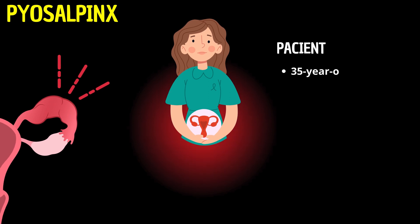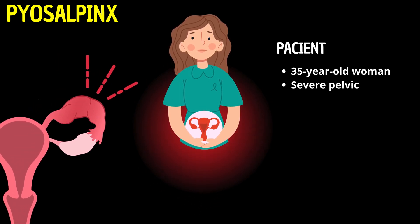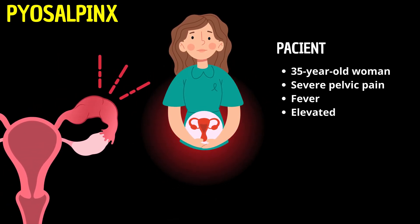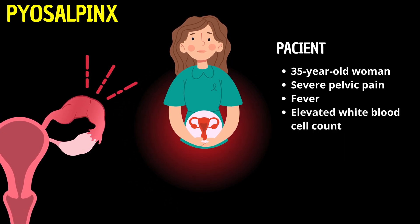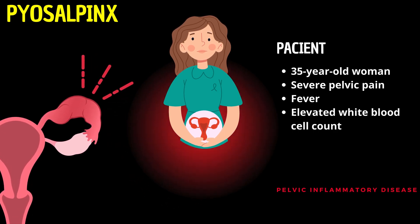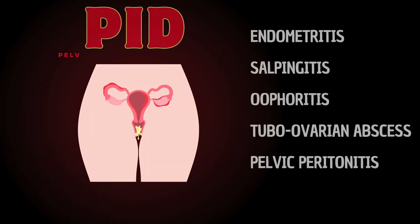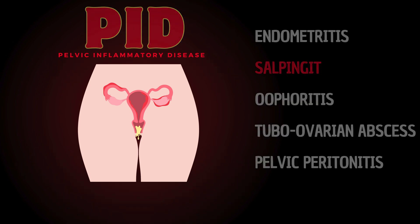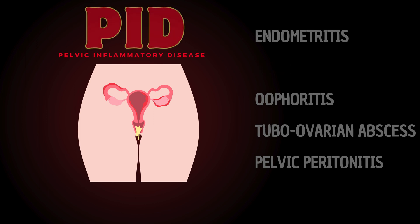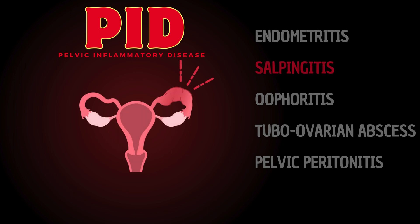A 35-year-old woman experiencing severe pelvic pain, fever, and elevated white blood cell count, pointing towards a classic presentation of PID. PID encompasses a spectrum of inflammatory disorders of the female upper genital tract. One of the most serious complications of untreated PID is salpingitis, an infection and inflammation of the fallopian tubes which can lead to the formation of pyosalpinx. This condition can cause peritoneal adhesions and significantly impact fertility.